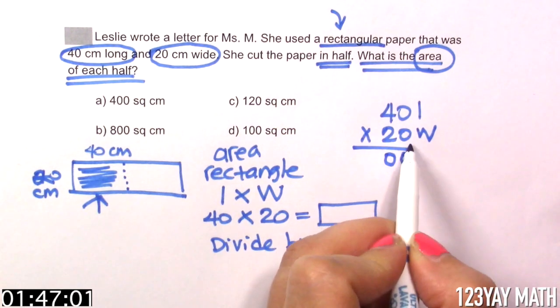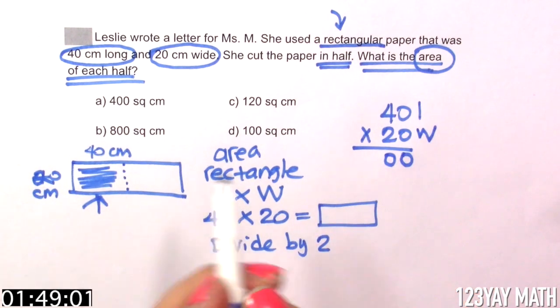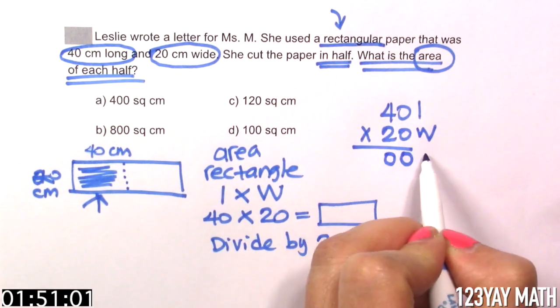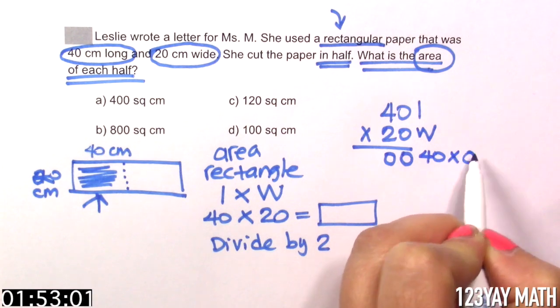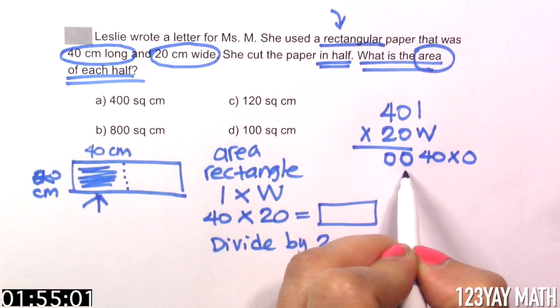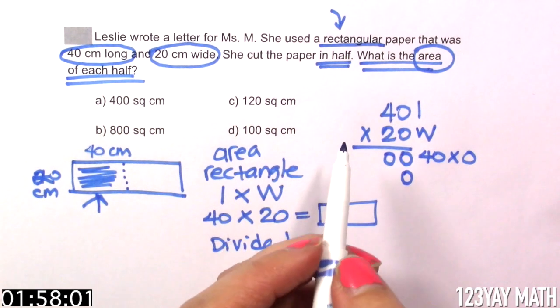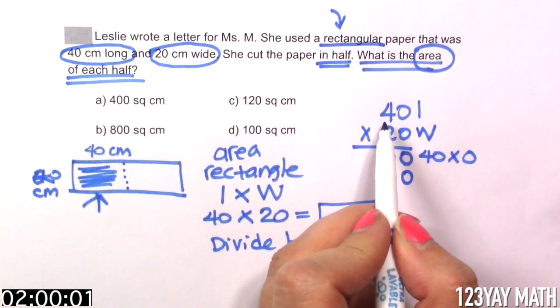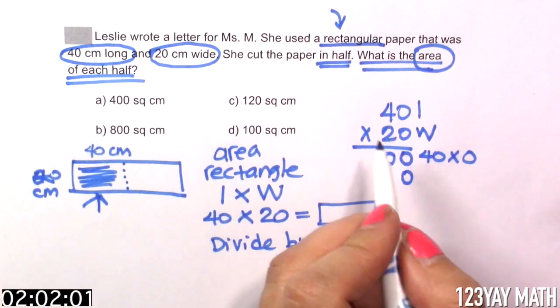You know that any number multiplied by 0 is 0, and this is 40 times 0. Step 2, you're going to drop a 0. So many 0's.